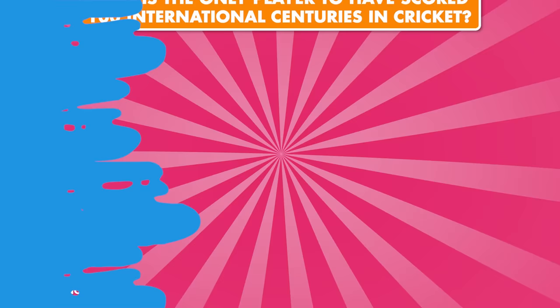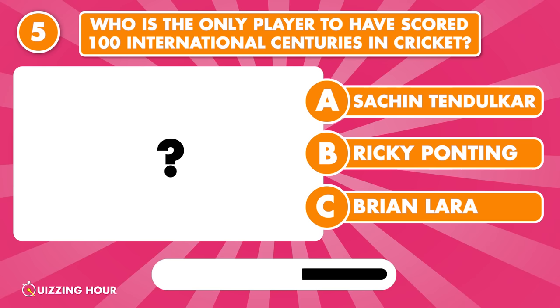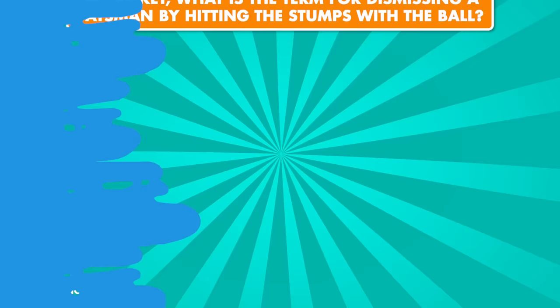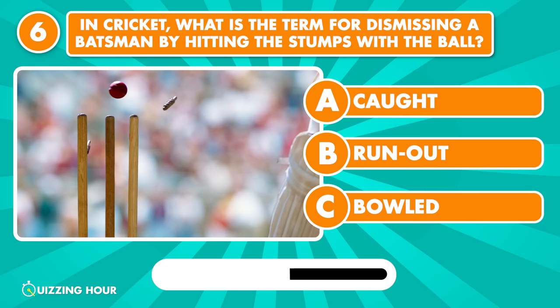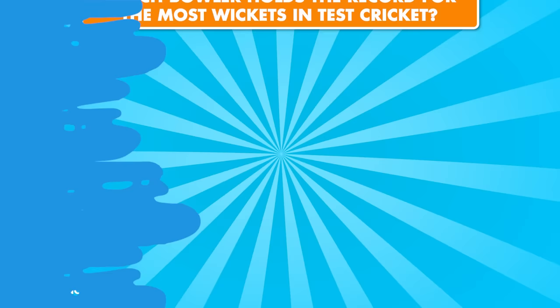Who is the only player to have scored 100 international centuries in cricket? Sachin Tendulkar. In cricket, what is the term for dismissing a batsman by hitting the stumps with the ball? Bowled.